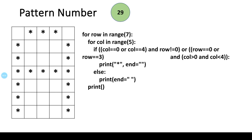As usual, I have drawn this pattern in the form of a table or a grid. In order to write the program, I will be numbering the rows and columns of this pattern starting from 0. So the columns go from 0 to 4, and the rows go from 0 to 6, giving us 5 columns and 7 rows.